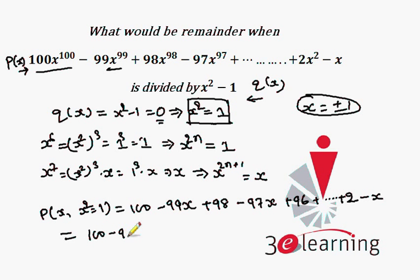By taking all constants on one side, that is 100 plus 98 plus 96 till 2, taking x or minus x common, we have all odds: 99 plus 97 till 1. And this is my answer.